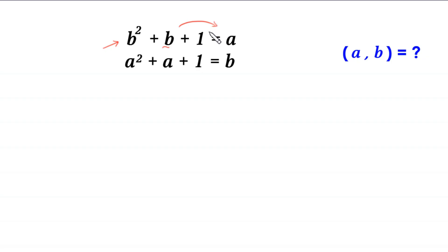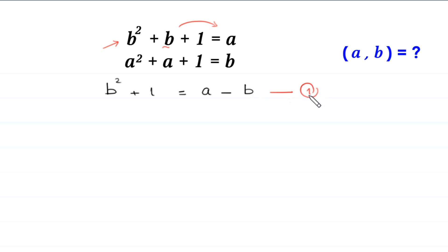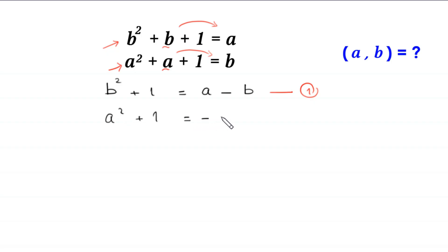Starting from the first equation, if we move b to the right hand side, this becomes b squared plus 1 is equal to a minus b — let's call this equation number 1. From the second equation, moving a to the right hand side gives a squared plus 1 is equal to negative a plus b — let's call this equation number 2.